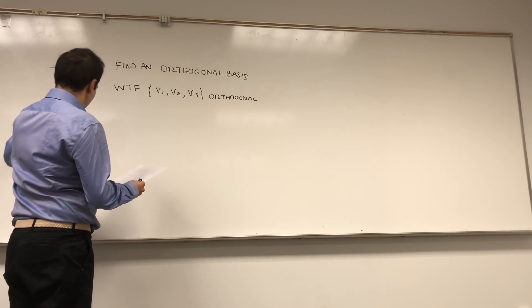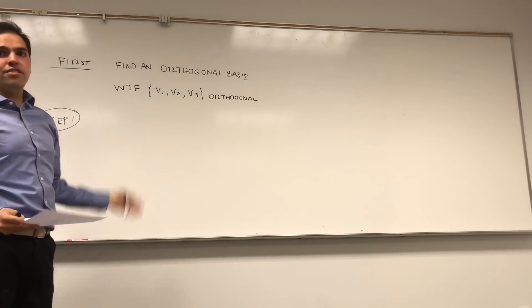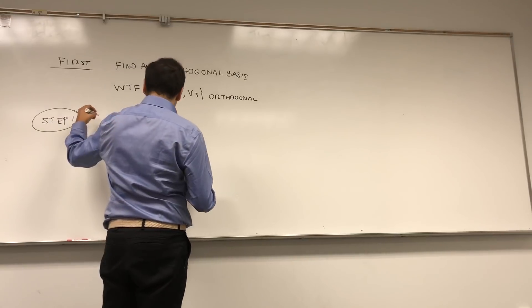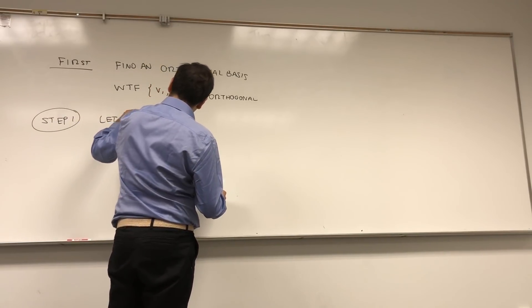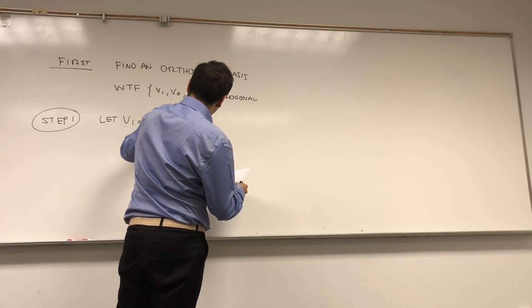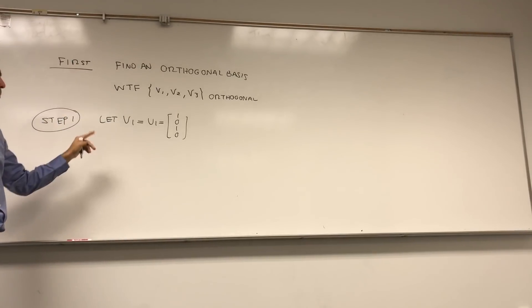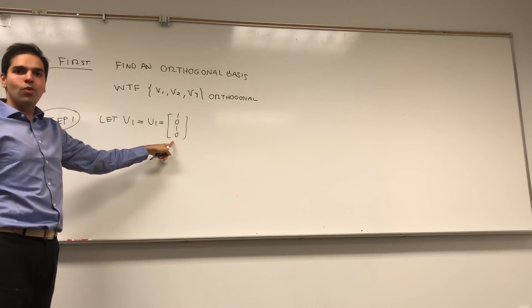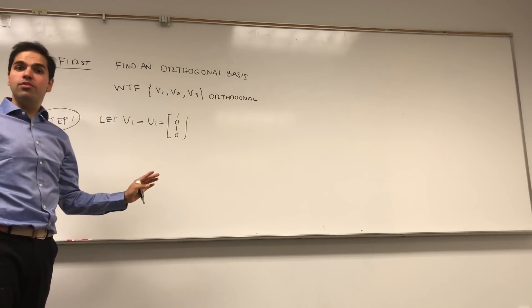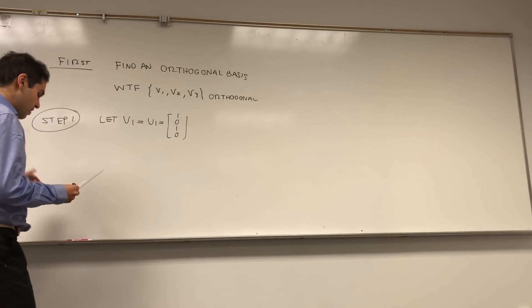Let's first find an orthogonal basis. Then the orthonormal thing will be very quick, I promise you. So we want to find V1, V2, V3 orthogonal, but with the same span as our set W. That's very important because it's easy to produce orthogonal sets, but here we want to have an orthogonal set with the same span as W. And well, there's nothing we can really do. Let's just start with something. Step one: our first vector V1, let's just let it be U1. V1 equals U1 equals 1, 0, 1, 0.